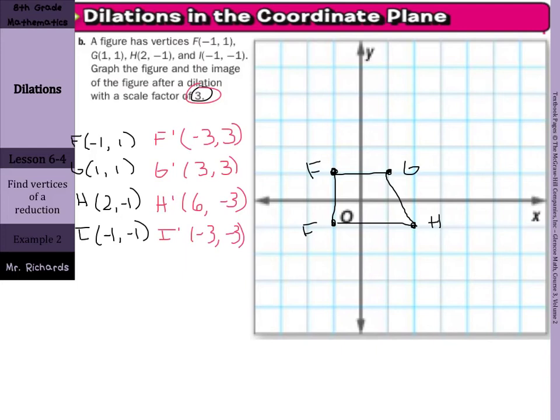As we graph this figure, (-3, 3) is the new F, F prime. G is at (3, 3), H is at (6, -3), and I prime is at (-3, -3). And now we can draw this.